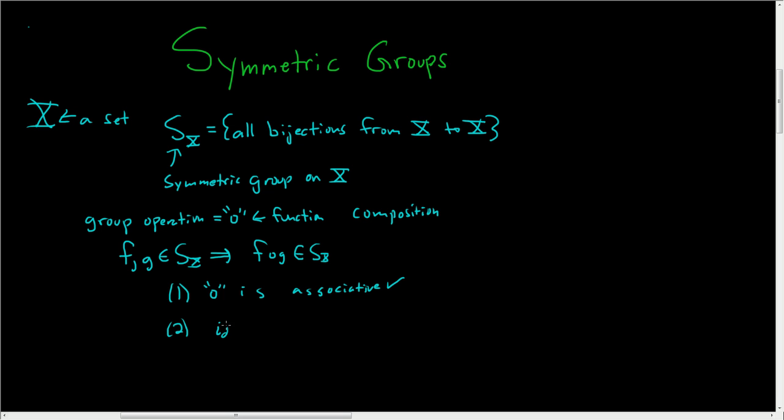We need an identity element if this is going to be a group. This will be the identity element ID, and it's a map because the elements of this set are actually maps. It's given by ID of X equals X for all X in capital X.